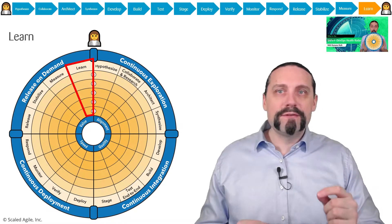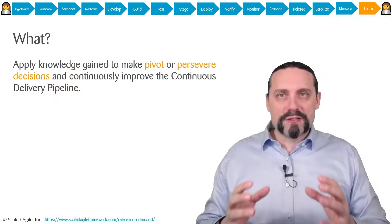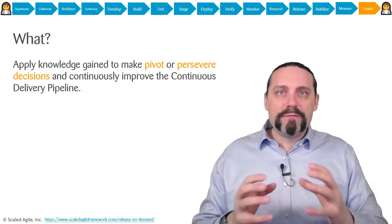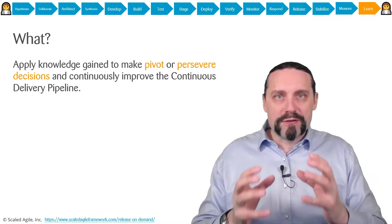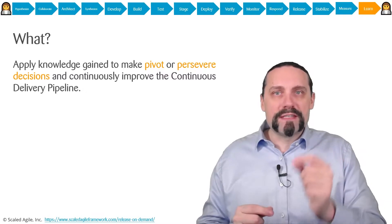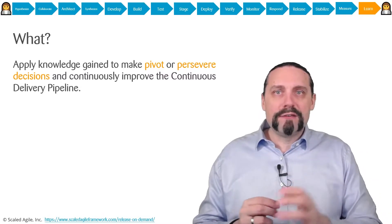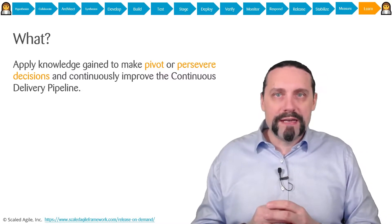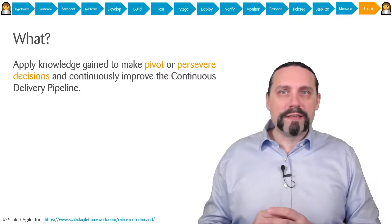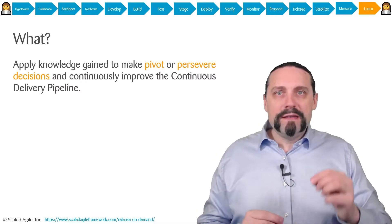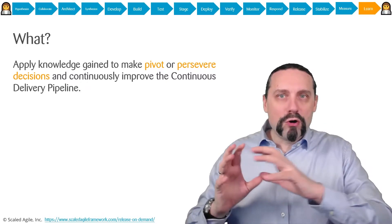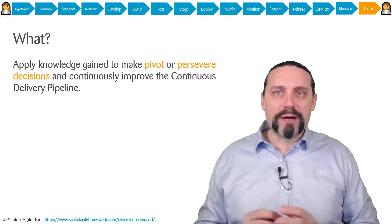With that information we go into the learn step. Using the knowledge gathered from the measure step, we can now make a pivot or persevere decision on whether we are going to invest more or less into a feature or into an epic. We are also continuously improving our whole continuous delivery pipeline.